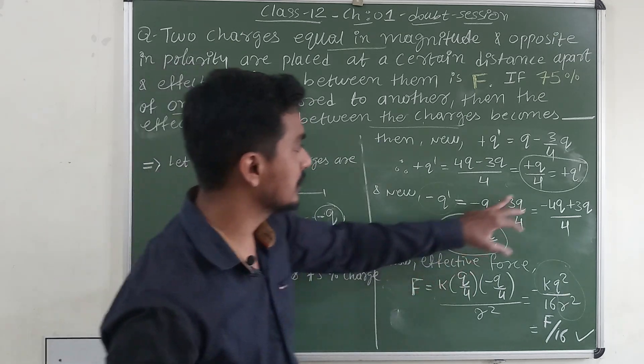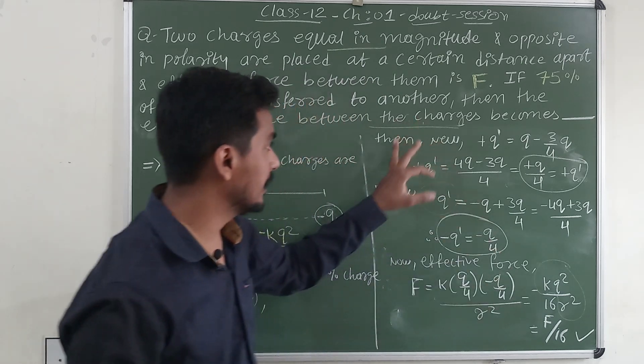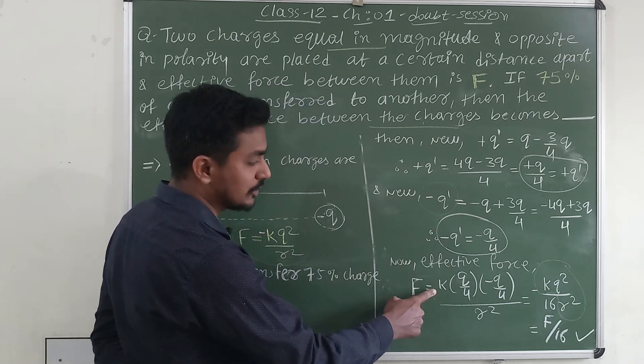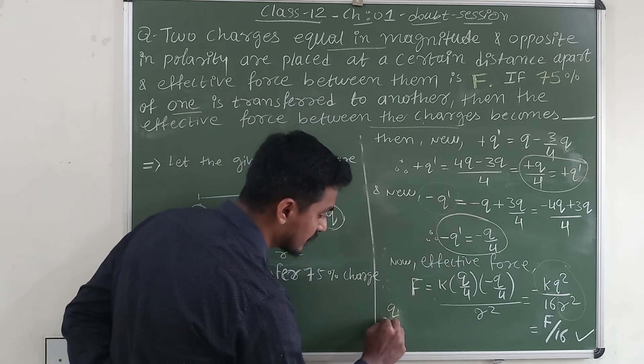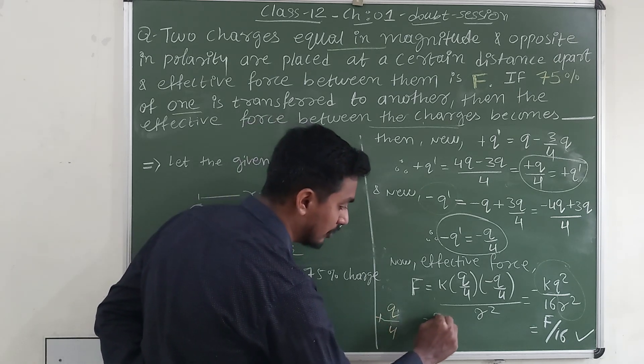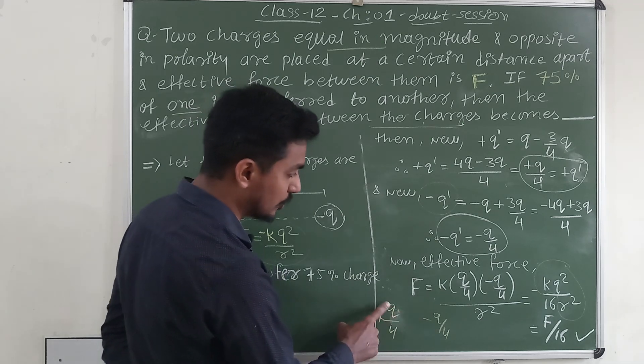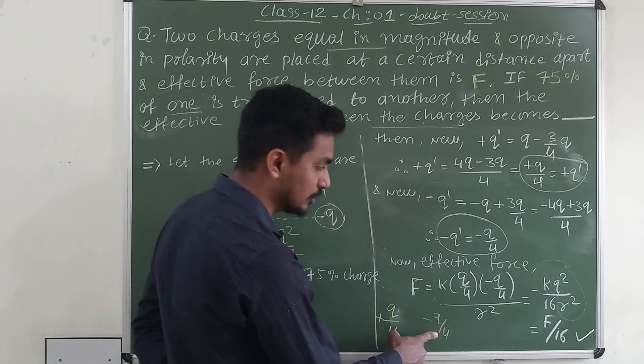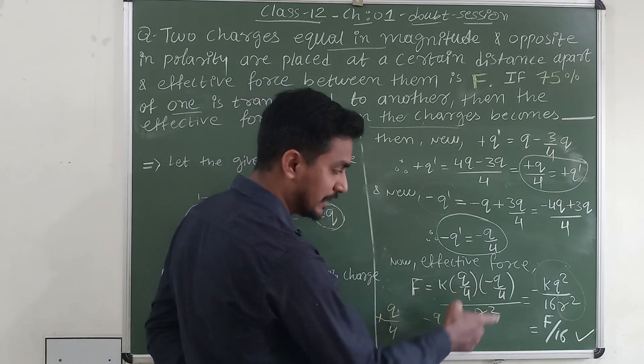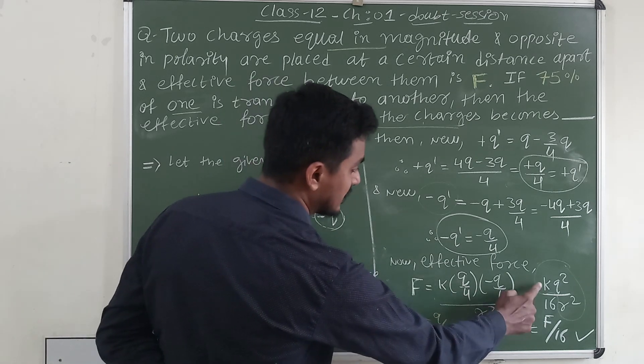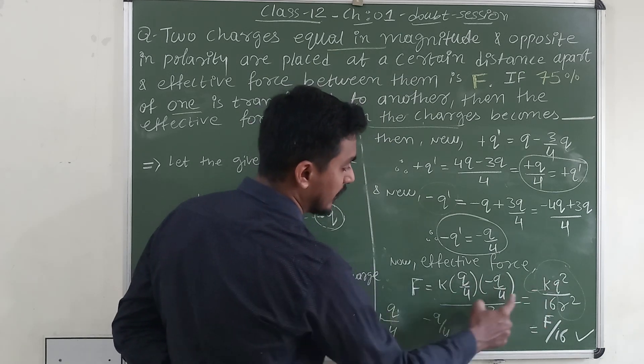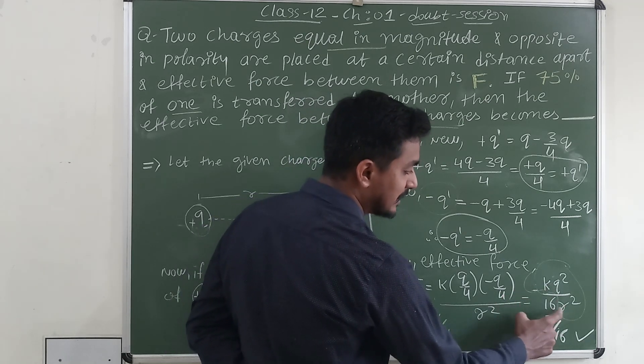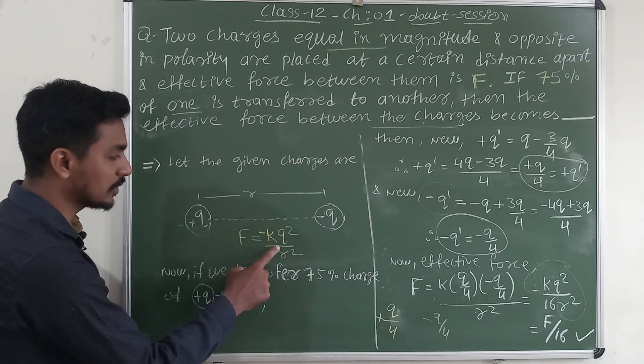It is the new negative charge and this is our new positive charge. Now we have to find the effective force between these two charges. Again we apply Coulomb's law, then F equals K. Our new charge is plus Q by 4 and another is minus Q by 4. K into Q by 4 into Q by 4, that is K Q1 Q2 by R square. This is our Q1, this is Q2. K Q by 4 into minus Q by 4 by R square. Minus sign if we take outside here, Q into Q is Q square, 4 into 4 is 16. We will get minus K Q square by 16 R square, but minus K Q square by R square is our original force.